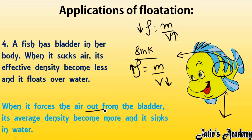When the fish forces air out from the bladder, its average density increases and it sinks in water. As already explained, if air moves outside, volume reduces, and when volume reduces, density increases. If the density of an object is more than that of water, it will sink.